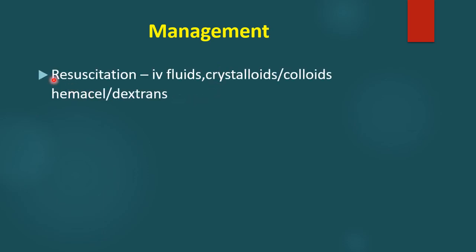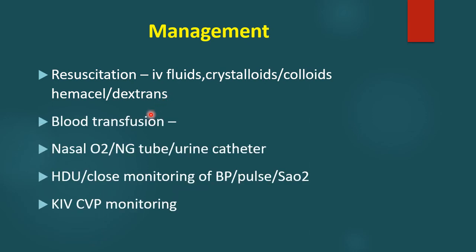Next is the management of lower GI bleeding. First, resuscitation — as in all cases of bleeding, initial treatment is resuscitation. Replacement of IV fluids and electrolytes is needed; sometimes crystalloids and colloids like hemaccel or dextran, especially for those with signs of shock. Blood transfusion is an important part of initial treatment if there are indications such as severe anemia, hypotension, and impending shock. Supportive treatment includes nasal oxygen, nasogastric tube to aspirate blood, and urinary catheter with input-output chart.